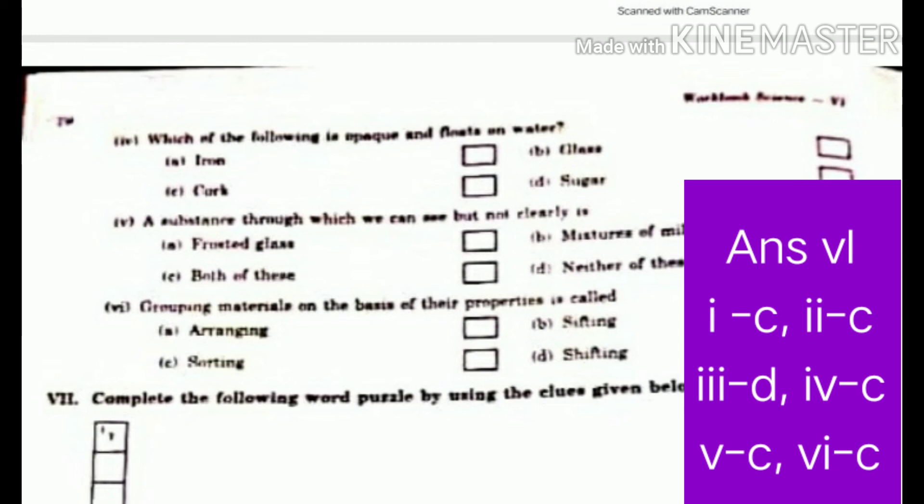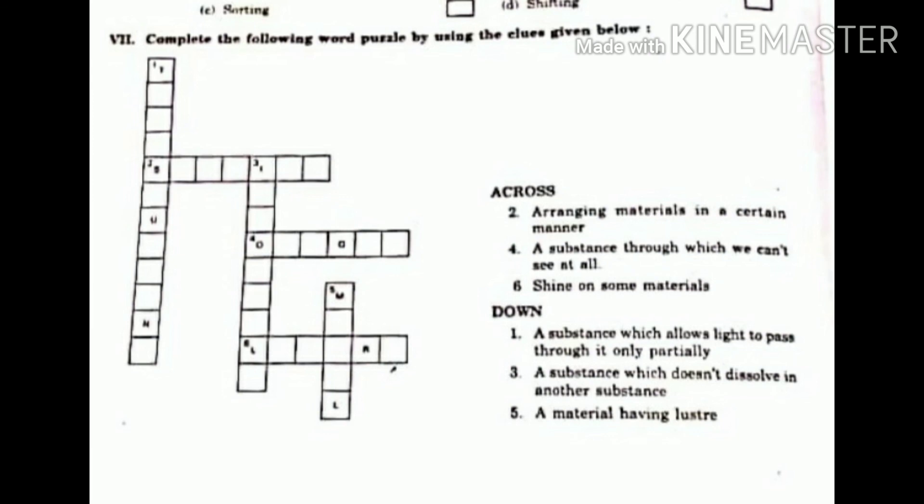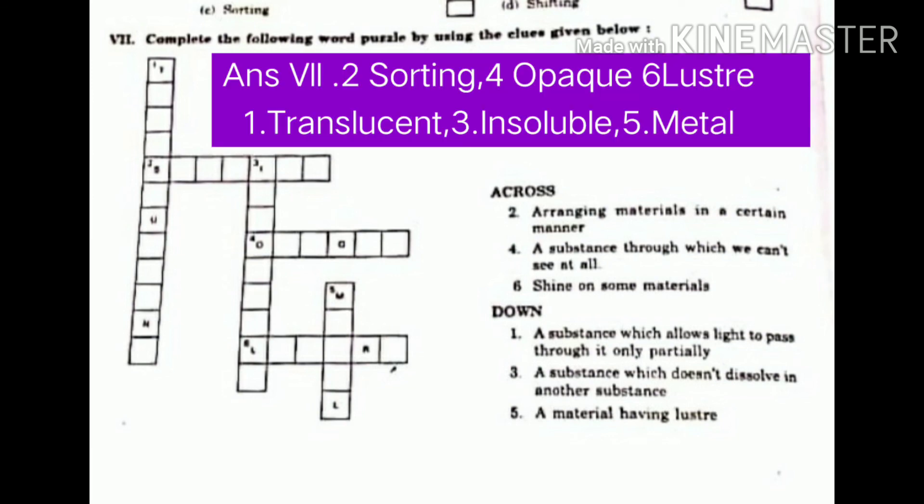Fifth. A substance through which we cannot see but not clearly is frosted glass mixture of milk and water. The answer is C. Both of these. Sixth. Grouping materials on the basis of their properties is called C. Sorting.